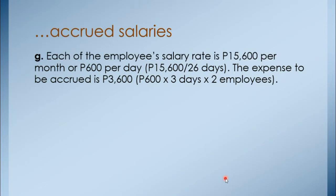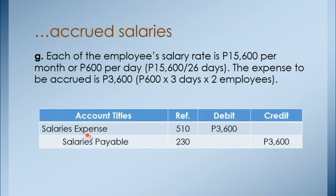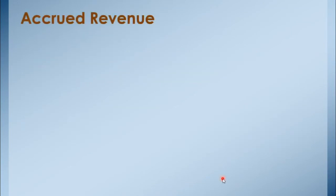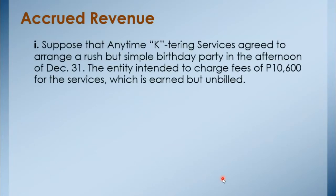That is for two employees — the office assistant and the account executive — who have not yet been paid. The adjusting journal entry would be: debit Salaries Expense 3,600 and credit Salaries Payable 3,600. In this case, salaries are recognized as expense even though the company has not yet paid them. Next is accrued revenue.